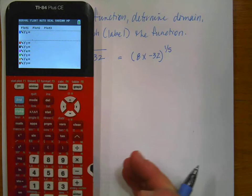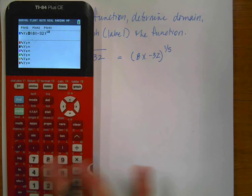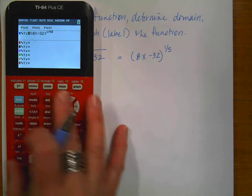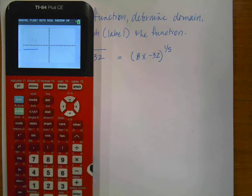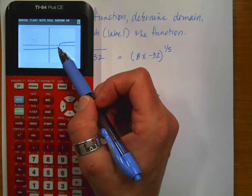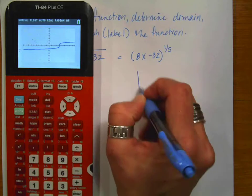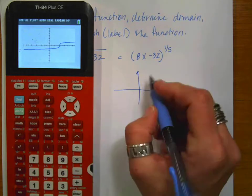So now I'm going to go to my y equals, clear what's there, and I do 8x minus 32, raise it to the 1/5. And I'm actually going to go ahead and do a zoom 6 right now and start with the graph.